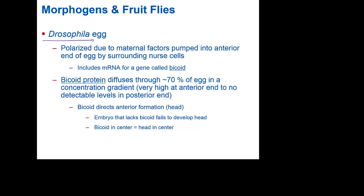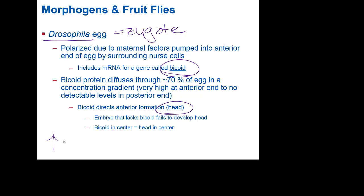When we look at the idea of building this egg — changing it from simply a fertilized egg or zygote into a developing animal — in fruit flies, one of the first things we use is something called bicoid. This bicoid protein is actually going to develop the head. In high concentrations of bicoid, you get a head; in low concentrations of bicoid, you get a tail.